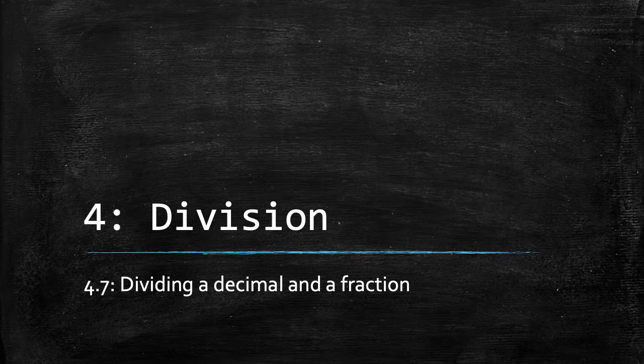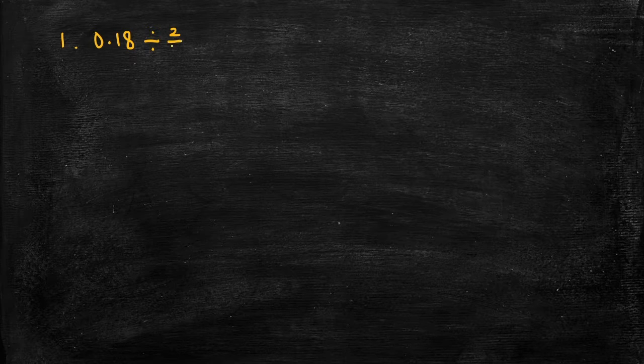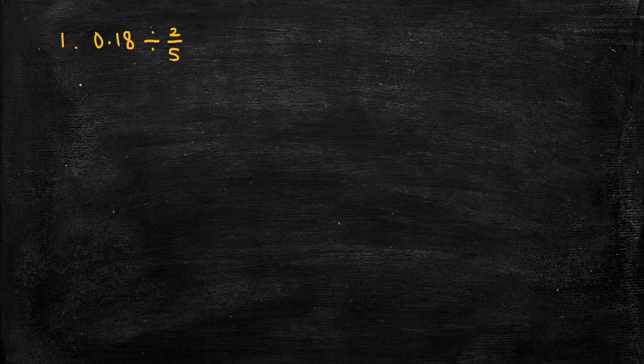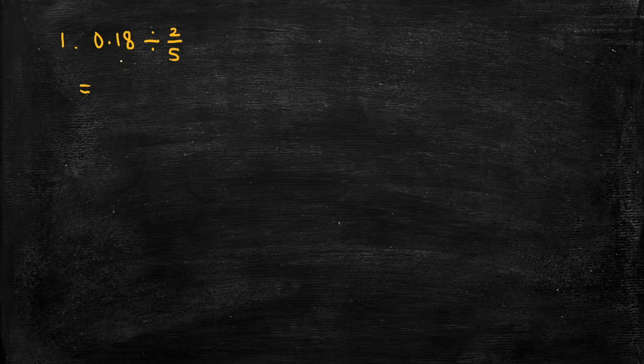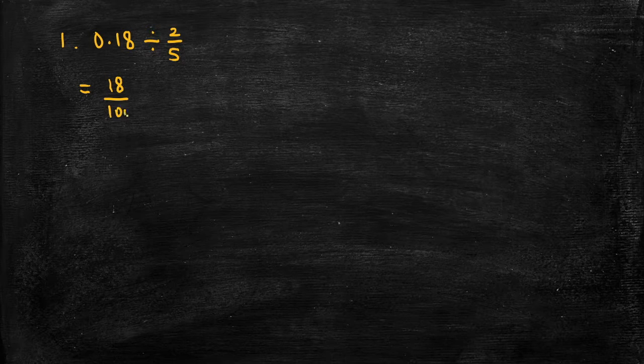Here's some examples of dividing a decimal and a fraction. Let's start with the decimal 0.18 and divide that by 2 fifths. So generally the best approach here is to change the decimal into a fraction. So we can express 0.18 as 18 over 100 and we're dividing that by 2 fifths.